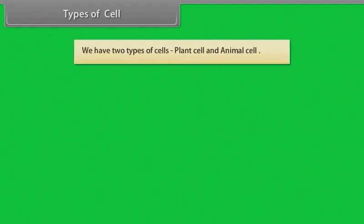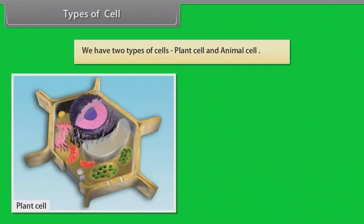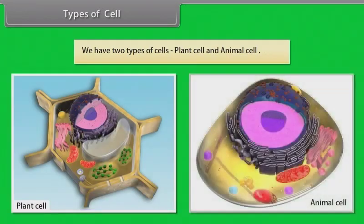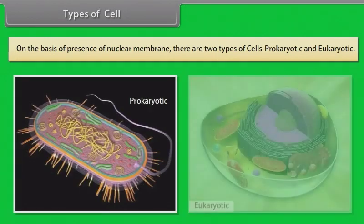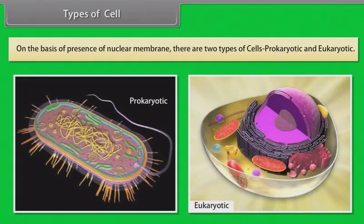Types of cells: We have two types of cells — plant cell and animal cell. On the basis of presence of nuclear membrane, there are two types of cells: prokaryotic and eukaryotic.